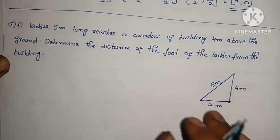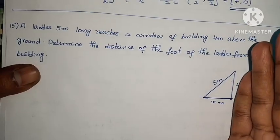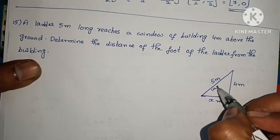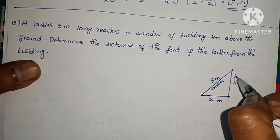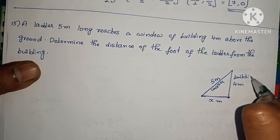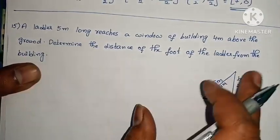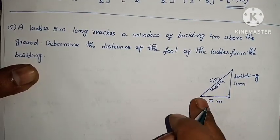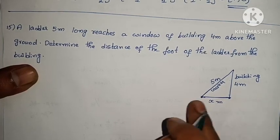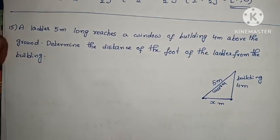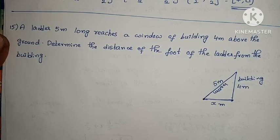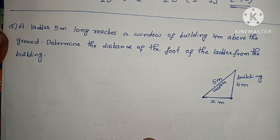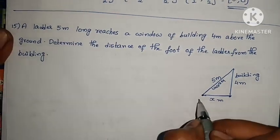This forms a right-angle triangle. The building is the vertical side, the ladder is the hypotenuse, and x is the distance from the foot of the ladder to the building — the horizontal side. According to Pythagoras' theorem, hypotenuse square equals to the sum of squares of the other two sides.